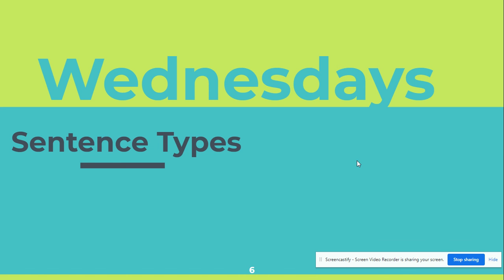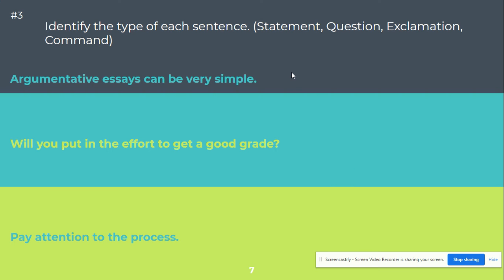Wednesdays are going to be sentence types. Each week you're going to be given three different types of sentences and you're going to be asked to identify the type each sentence is. They can be a statement, question, exclamation, or a command. I would highly encourage you to look at the end punctuation to be able to help you.